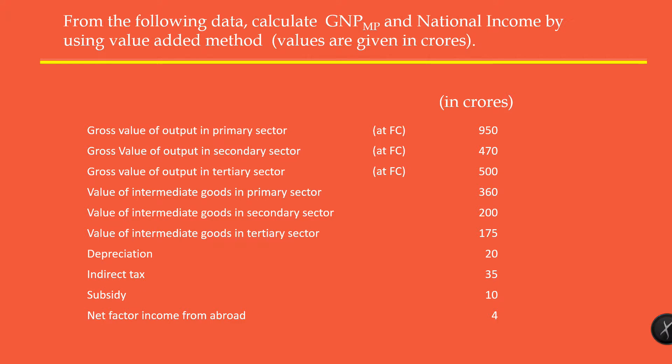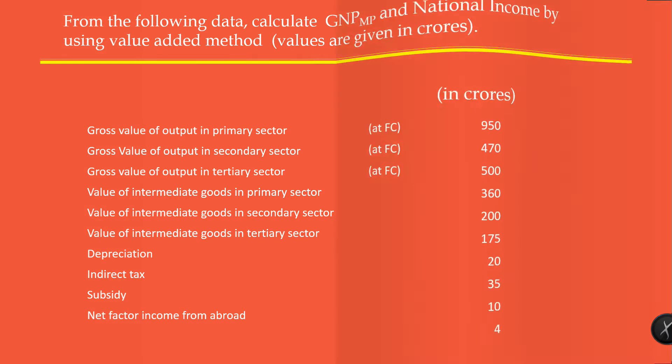Subsidy: 10 crores. Net factor income from abroad: 4 crores. From this data, the measures we are going to calculate are national income, i.e., net national product at factor cost, and gross national product at market price.